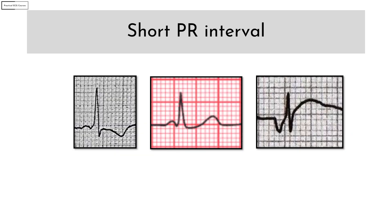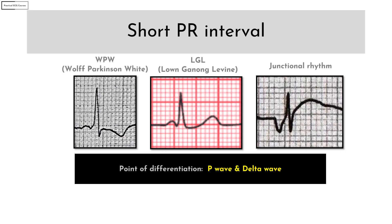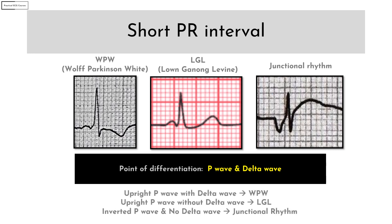There are three important DDs for a short PR interval: WPW, LGL, and junctional rhythm. The point of differentiation is the P wave and the delta wave — look for whether the P wave is upright or inverted and whether the delta wave is present or not. If the P wave is upright and there is a delta wave, consider WPW. If the P wave is upright and there is no delta wave, consider LGL. If the P wave is inverted and there is no delta wave, consider a junctional rhythm.